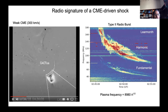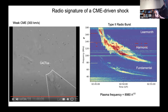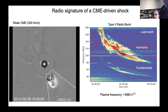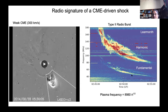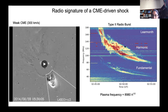I'll start with showing this movie of a CME which drove a shock and caused slow-drifting radio features which we call a type 2 radio burst. It has two lanes of emission which we call fundamental and harmonic. Harmonic is basically double the fundamental frequency. Because plasma frequency is proportional to the square root of electron density, it first appears at high frequency where electron density is high and as time progresses it moves to lower frequencies.